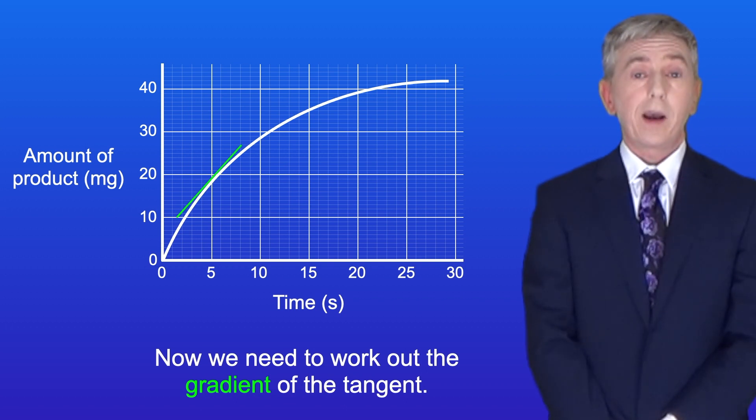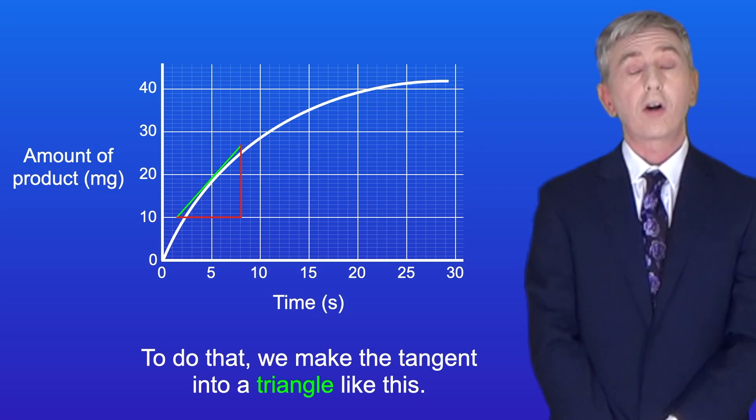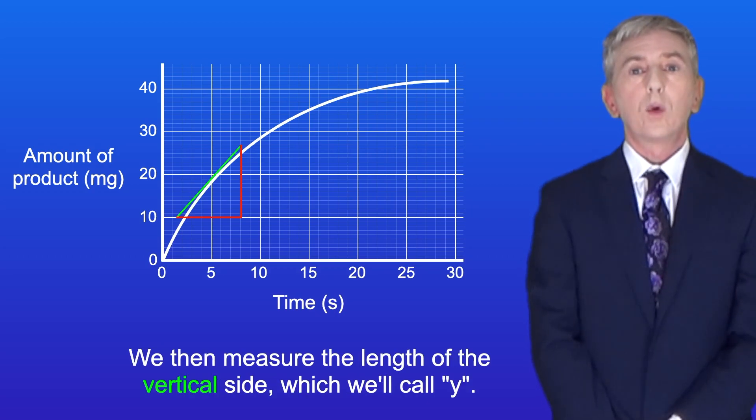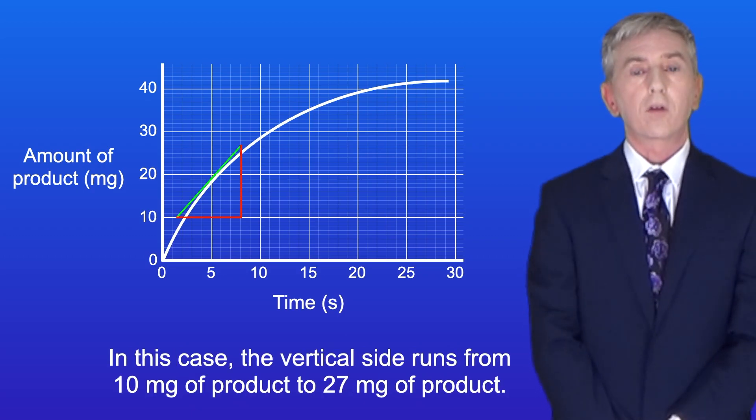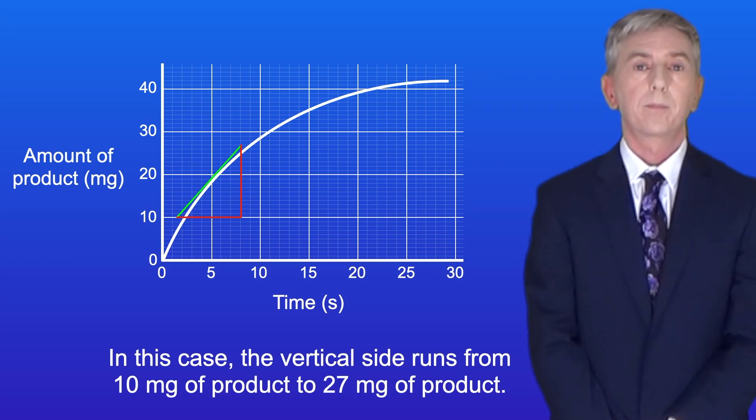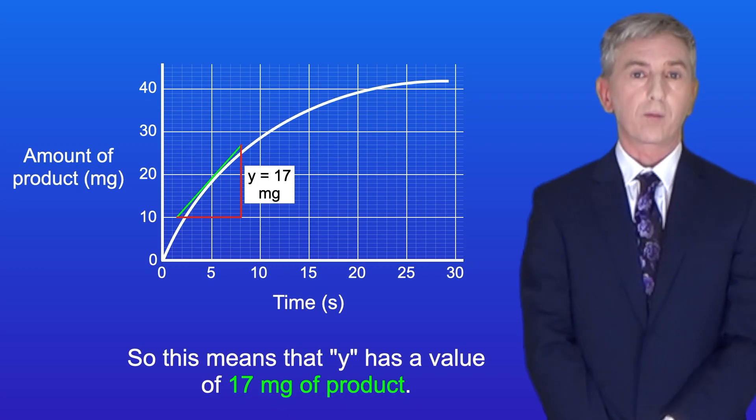Now we need to work out the gradient of the tangent. To do that we make the tangent into a triangle like this. We then measure the length of the vertical side which we'll call y. In this case the vertical side runs from 10 mg of product to 27 mg of product. So this means that y has a value of 17 mg of product.